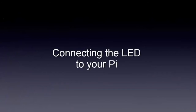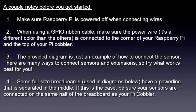Here we'll show you how to connect the LED to your Pi. A couple of notes before you get started: make sure your Raspberry Pi is powered off when connecting wires. When using GPIO ribbon cable, make sure the power wire is connected to the corner of your Raspberry Pi at the top corner of your Pi cobbler. The provided diagram is just an example — there are many ways to connect sensors and extensions, so try what works best for you. Some full-size breadboards have a power line separating the middle; if so, be sure your sensors are connected on the same half of the breadboard as your Pi cobbler.